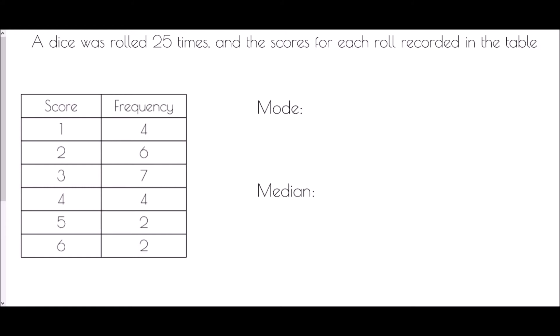Now we come to working out some averages from this table. The mode — if you've seen the previous video, you'll know that the mode is the most common value. In a frequency table we can call it the most frequent, which basically means the most common — the one that has the highest frequency.